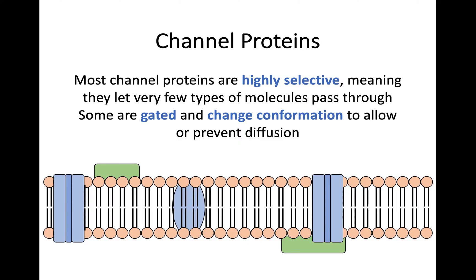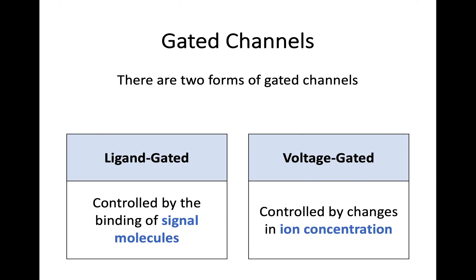To prevent any molecule from just going through that channel, many of these are gated. Gated, as the name suggests, just means there's a gate across this channel protein, and there's going to be a change in shape that's going to either close the gate to prevent diffusion or open the gate to allow a molecule to diffuse across. There are two types of gated channel proteins: ligand-gated channels, which are controlled by the binding of signal molecules — a specific signal molecule binds to the channel and it opens up — and voltage-gated channels, which are controlled by changes in ion concentration. I'll go into more detail about that in the next sub-key area.